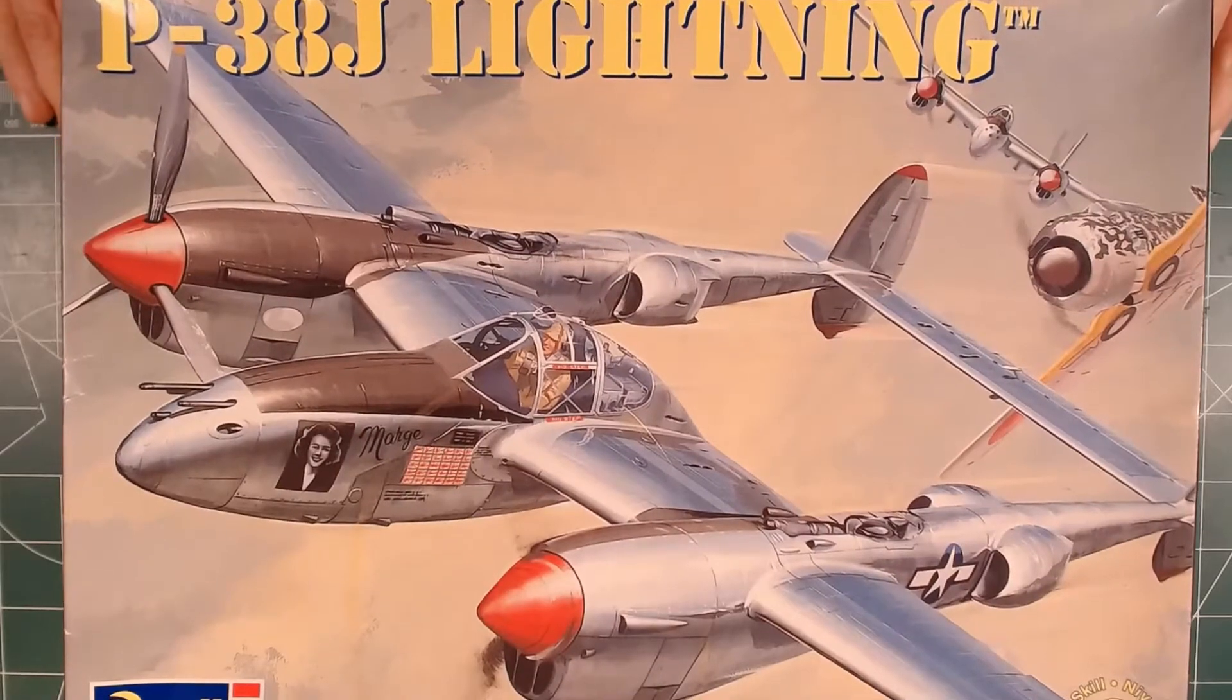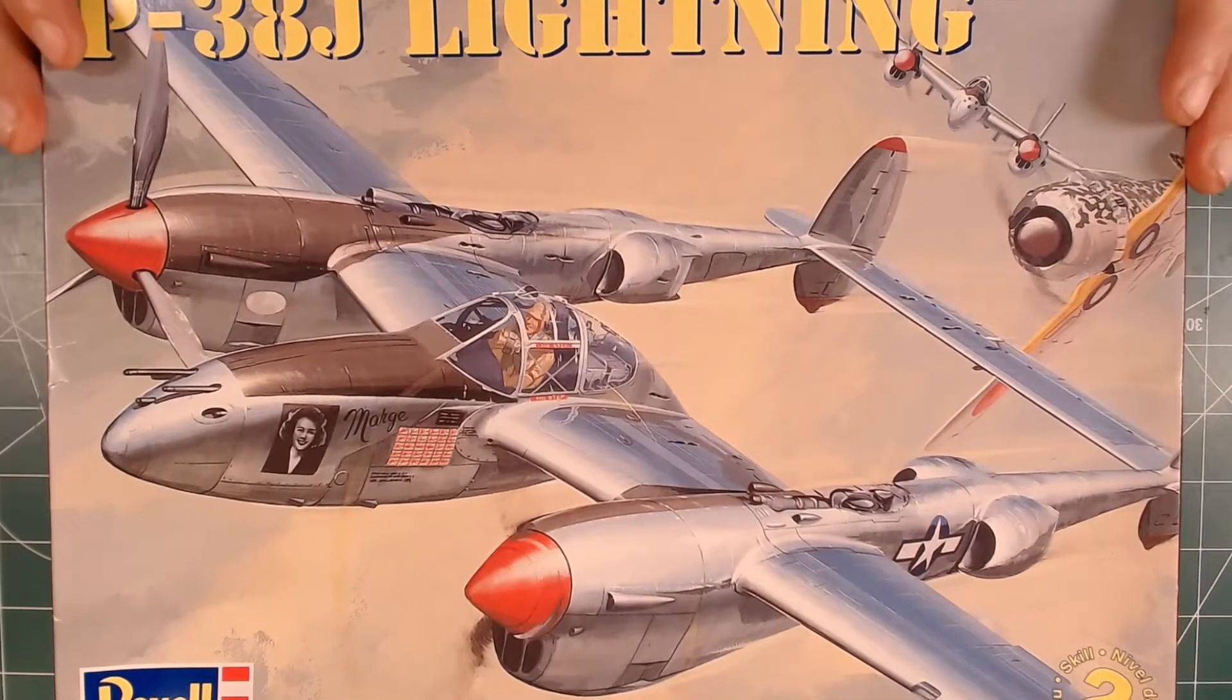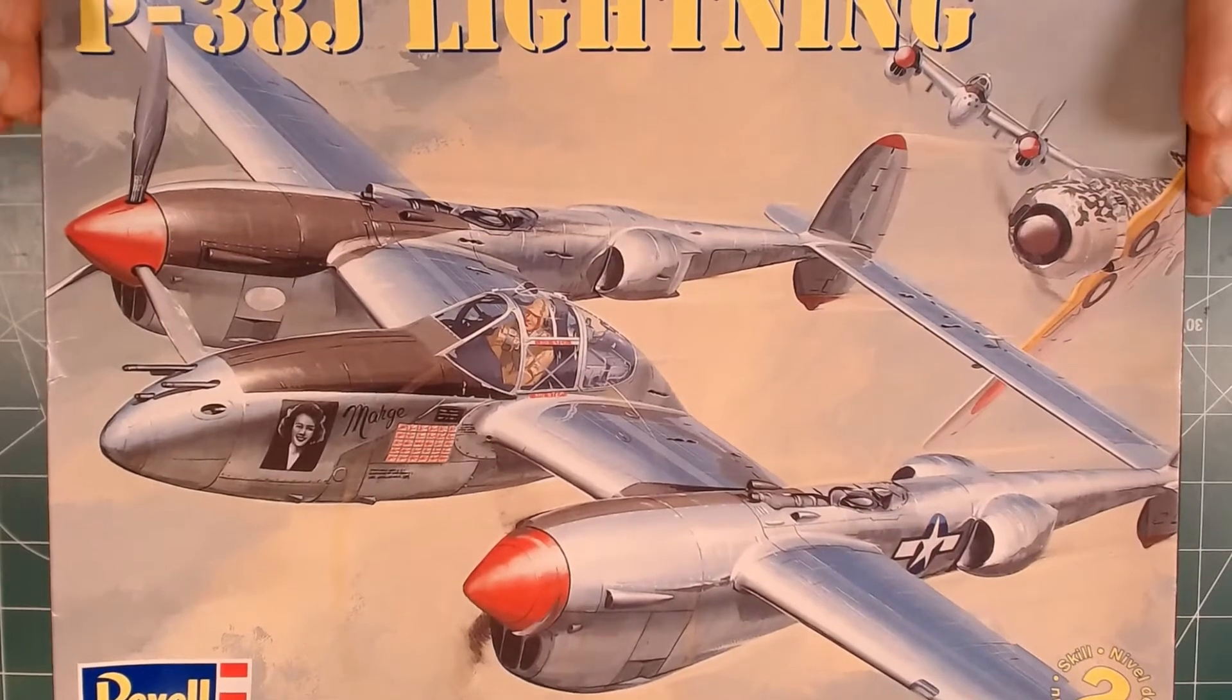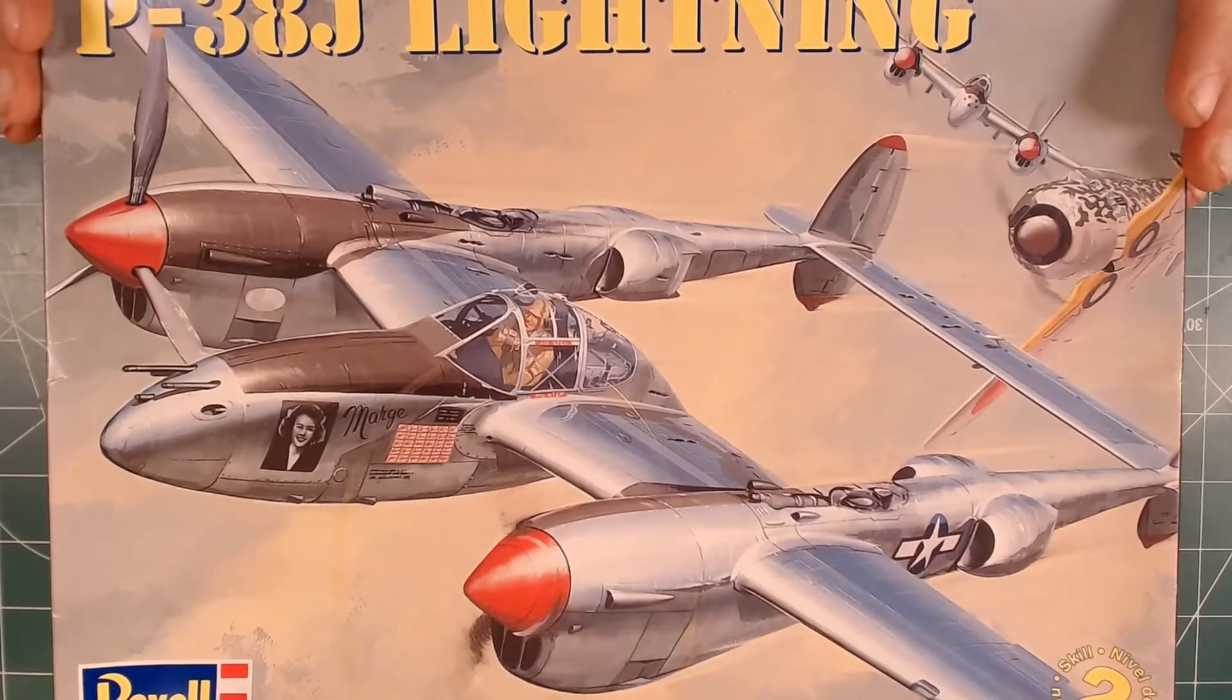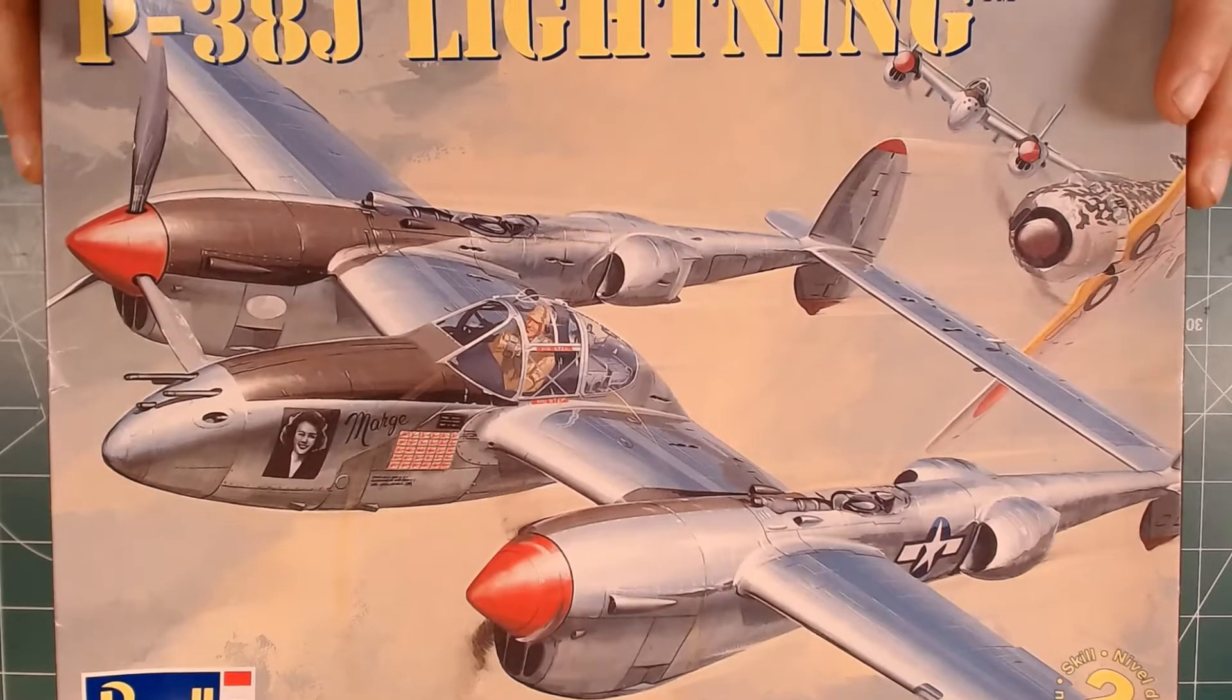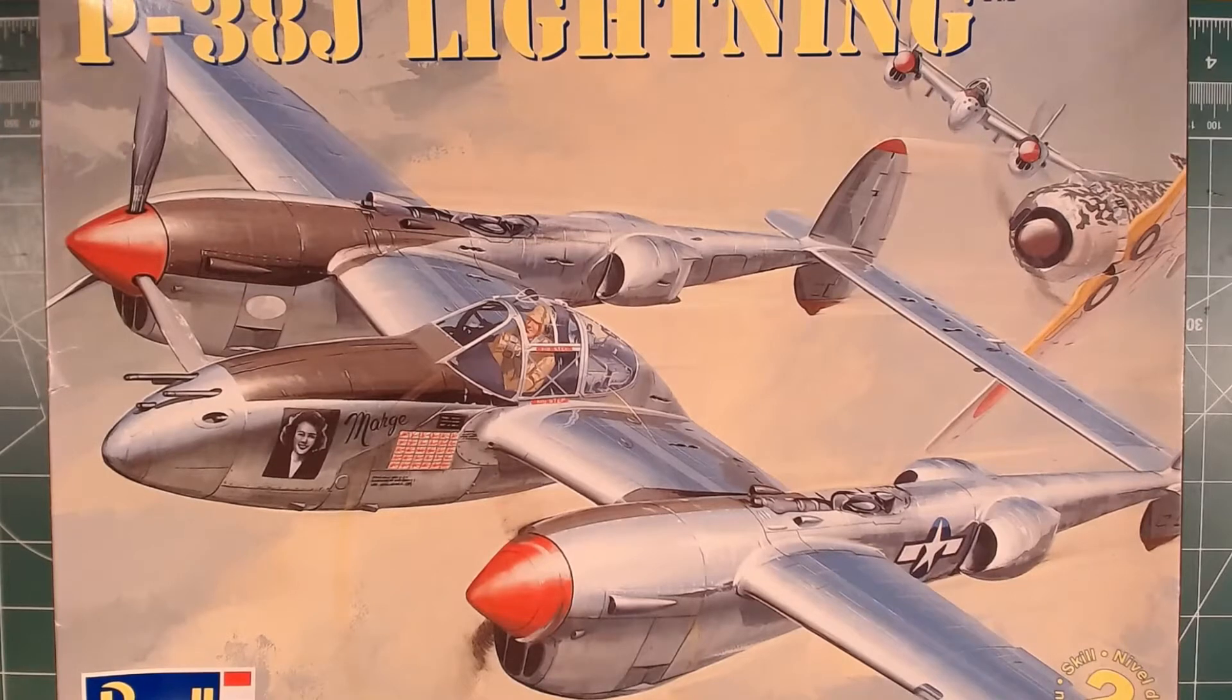This is the P-38J Lightning in 1:48 scale from Revell. A little about this model before we open it up and take a look inside. This particular mold was a new mold in 1964. I bought this model back in 2009 and it stayed in the stash for quite a while, until about three weeks ago.